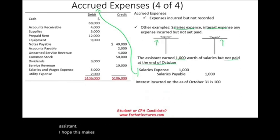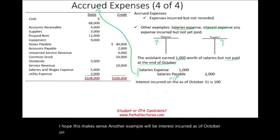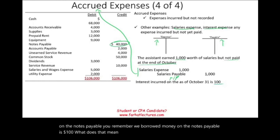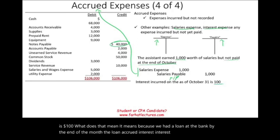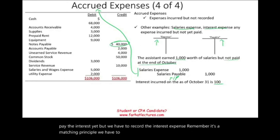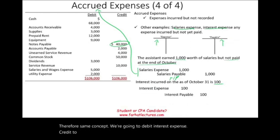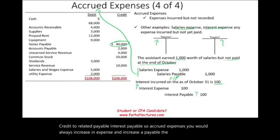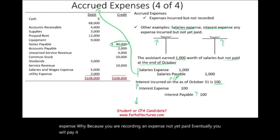Another example: interest incurred on the notes payable as of October is $100. We borrowed money on a notes payable, and by the end of the month the loan accrued interest. Interest is an expense — we did not pay it yet, but we must record it per the matching principle. The entry is: debit interest expense $100, credit interest payable $100. Once we eventually pay it, we reduce the payable and reduce cash.